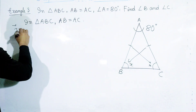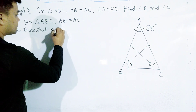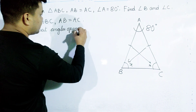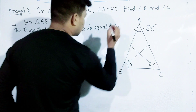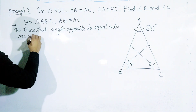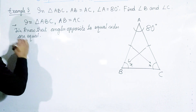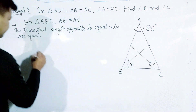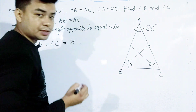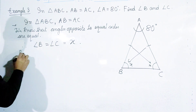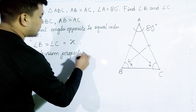AB is equal to AC. We know that the angles opposite to equal sides are equal, and therefore angle B is equal to angle C. Angle B equal to angle C is equal to x, by the angle sum property.